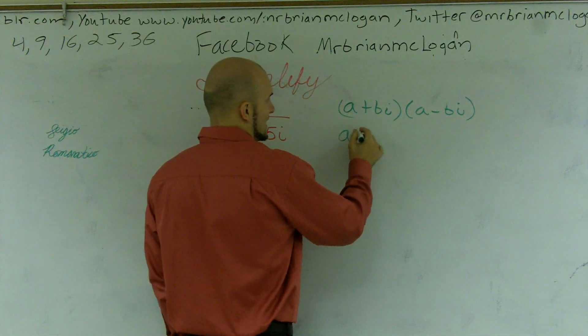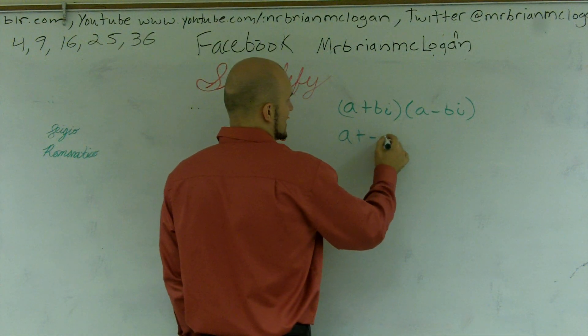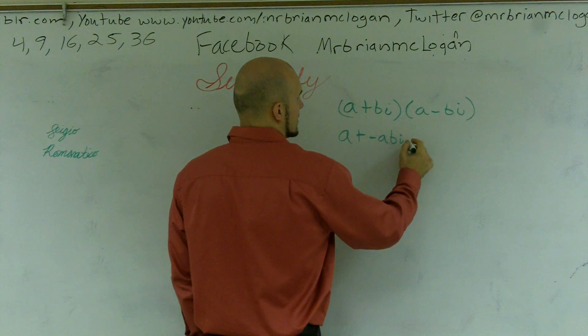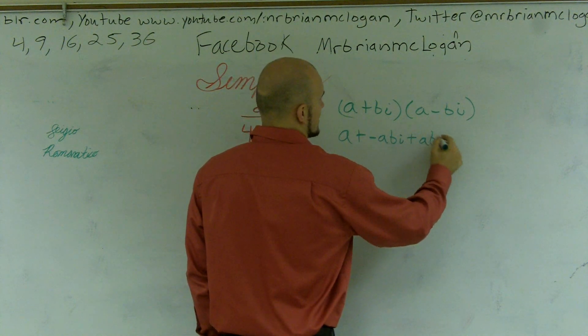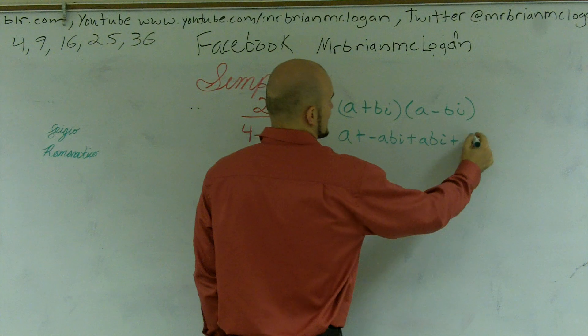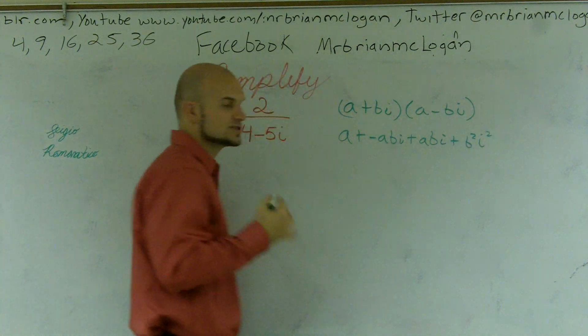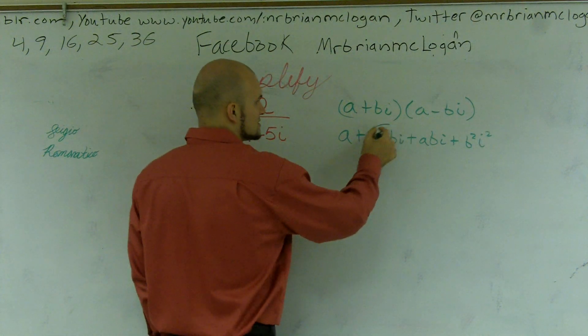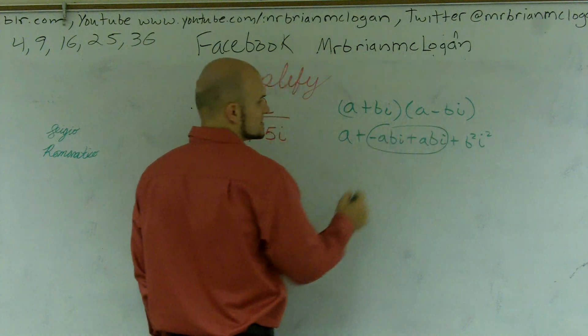What's so important about that is when I do this FOIL, I get a squared plus negative abi plus abi plus b squared i squared. What's so cool about this, we call it a difference of two squares—my middle terms cancel out.